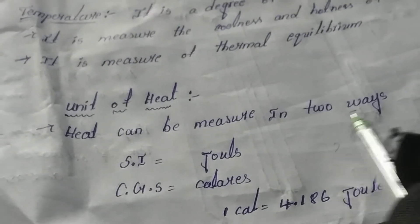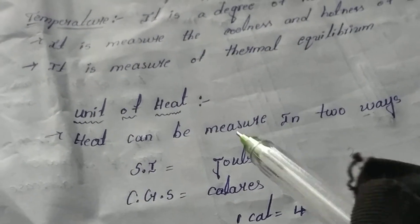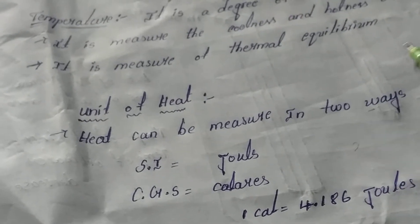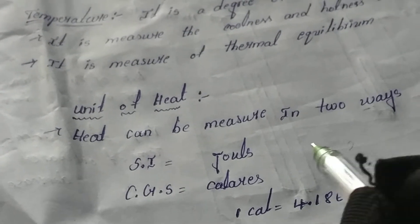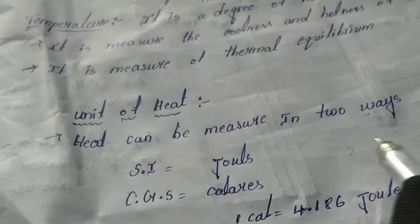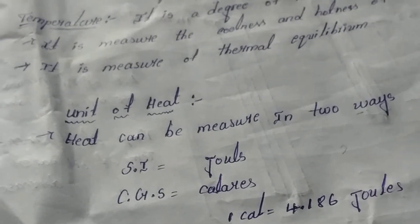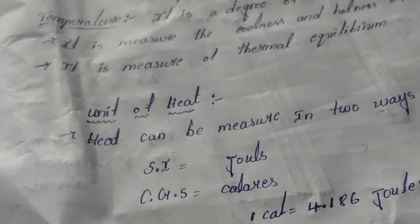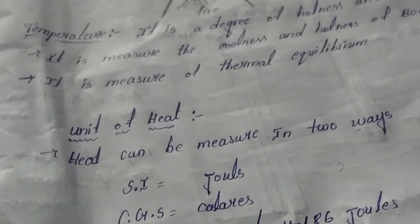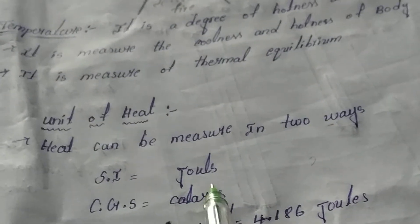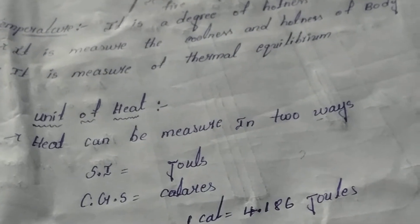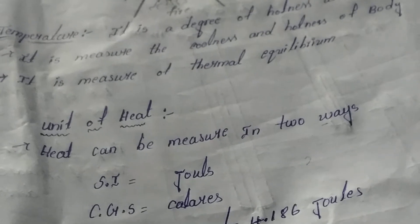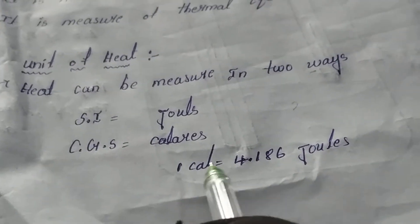In everything we have some units. We measure liquid in liters, distance in kilometers. Similarly, heat is also measured in units. Heat can be measured in two ways: SI units and CGS units. In SI units, heat is measured in Joules, and in the CGS system, heat is measured in calories.